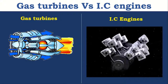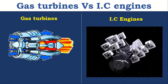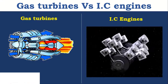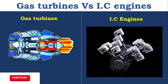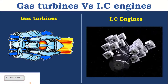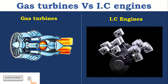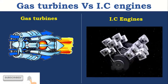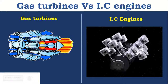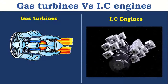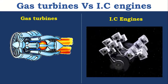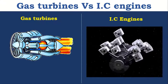Gas turbine consists of three major components: compressor, combustion chamber, and turbine. Whereas in IC engine, it consists of four major components: cylinder, piston, connecting rod, and crankshaft.